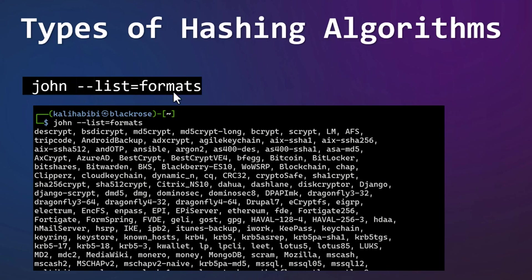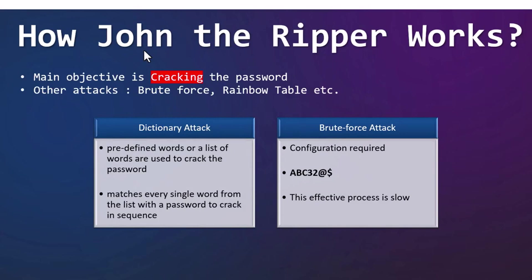Now let's see how John the Ripper works and what are the two main attacks it performs. The main objective of John the Ripper is to crack passwords. There are many ways it can do so, but it is mainly known for dictionary attacks. We can also run other types of attacks like brute-force attacks, rainbow table attacks, and so on. In a dictionary attack, the most popular and usable attack in John the Ripper, we use predefined words or a list of words to crack the password. The word list is a text file having predefined words, and it matches every single word from the list with the password to crack, in sequence.